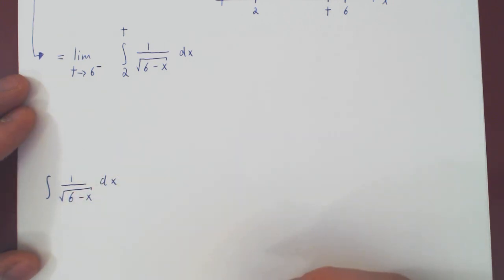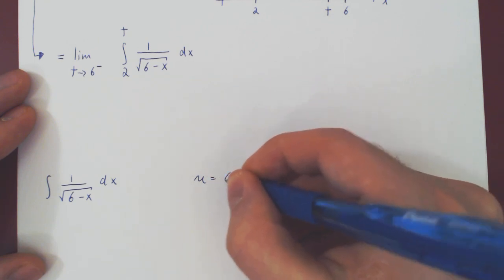We're trying to find the antiderivative of 1 over the root of 6 minus x. We can make a simple u-substitution, letting u be 6 minus x.